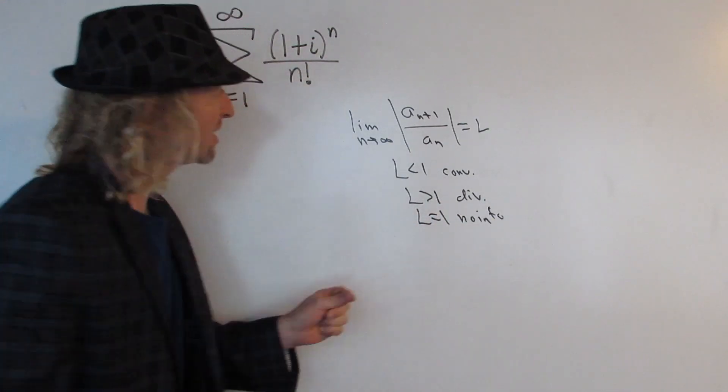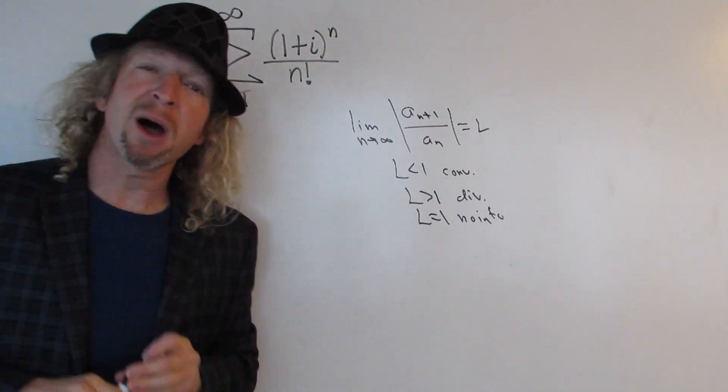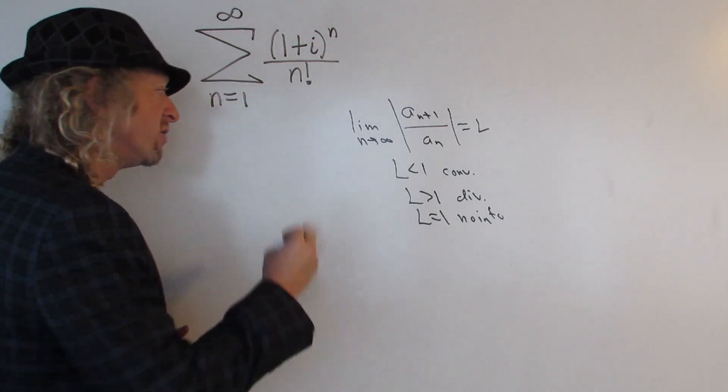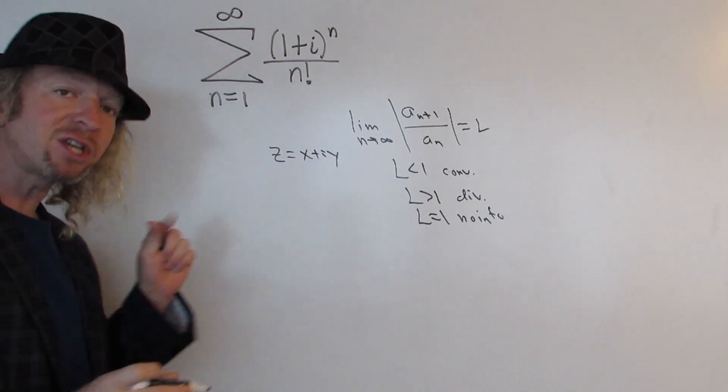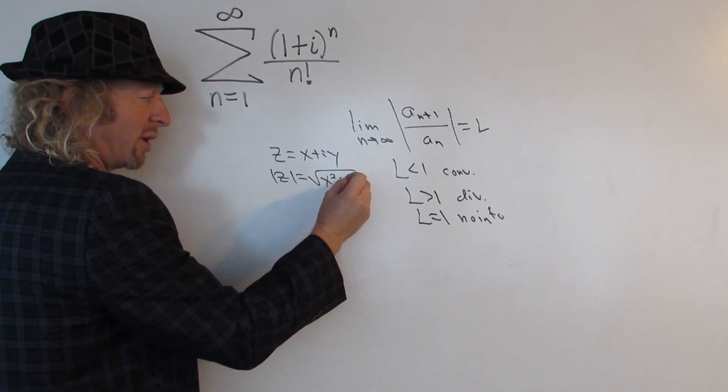So for complex series, it's almost the same except instead of absolute value, we use something called the modulus. So what is the modulus? It's actually super easy. If you have a complex number of the form x plus iy, the modulus of z is equal to the square root of x squared plus y squared.